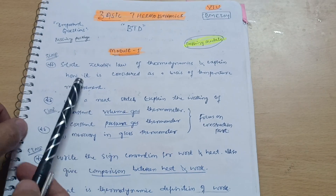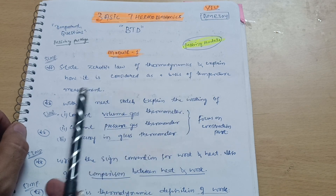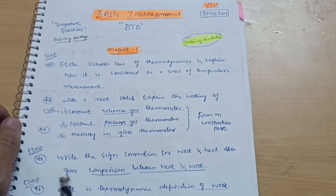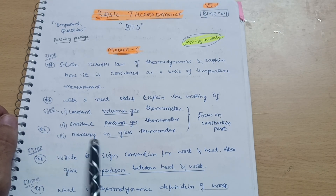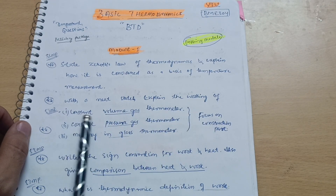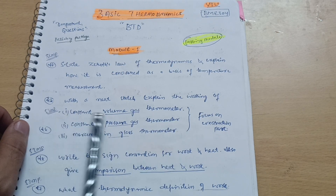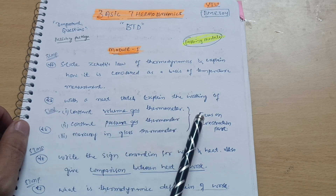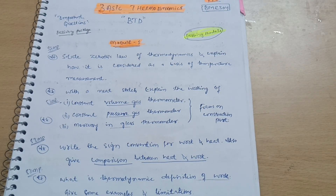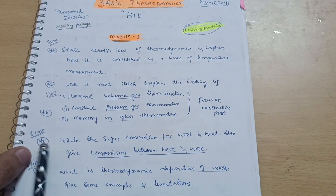Let's take the first passing module — Module 1. The first question is: state the Zeroth Law of Thermodynamics and explain how it is considered as a basis of temperature measurement. This is a super important question. Next is: with a neat sketch, explain the working of the constant volume gas thermometer, constant pressure gas thermometer, and mercury-in-glass thermometer. The first one is super important. Focus on the construction part in the exam — draw it neatly.